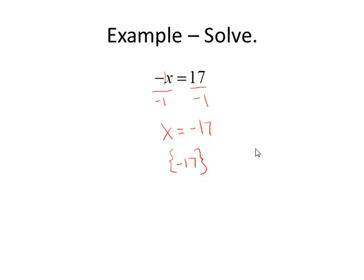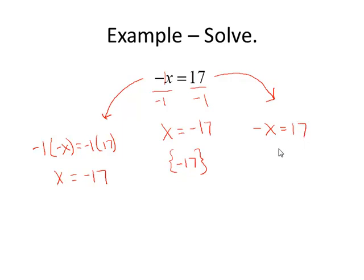However, there are two other ways we could have solved this. Over here to the side, I could have multiplied both sides by negative 1, because negative 1 times negative x yields a positive x, and negative 1 times 17 is negative 17. The last way we could solve it is actually through reasoning, which is a pretty good idea. This equation, negative x equals 17, can be read as the opposite of x is 17. Well, if the opposite of x is 17, what number is x? And we can reason that out to be the opposite of 17, or negative 17.